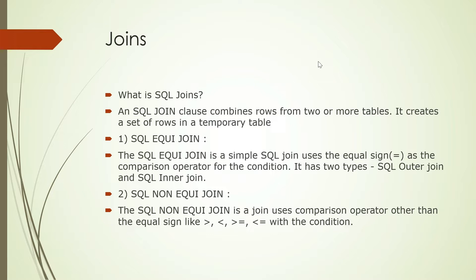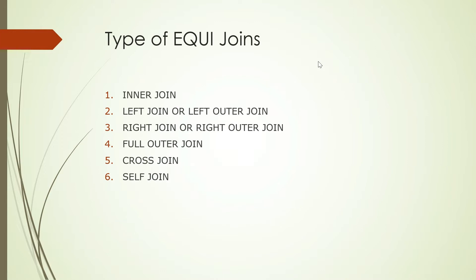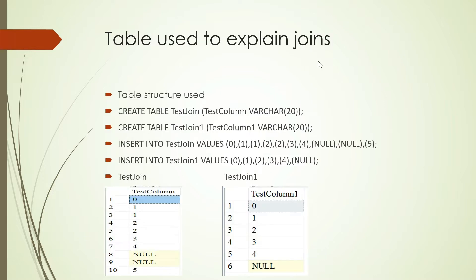The equi join then has two types: outer join and inner join. So we'll be focusing on the equi join. The different types of equi joins available are: inner join, left join (or left outer join), right join (or right outer join), full outer join, cross join, and self join.